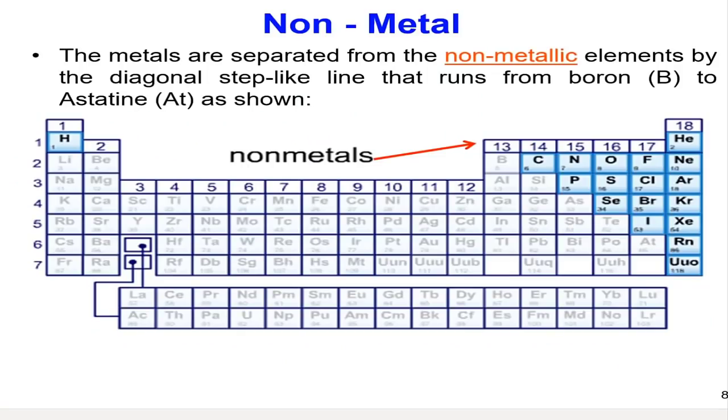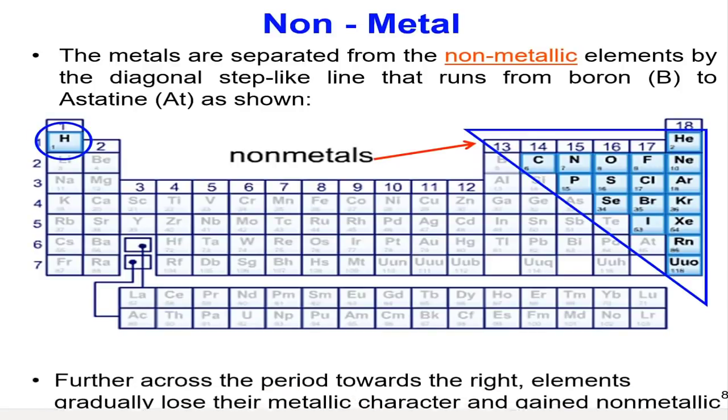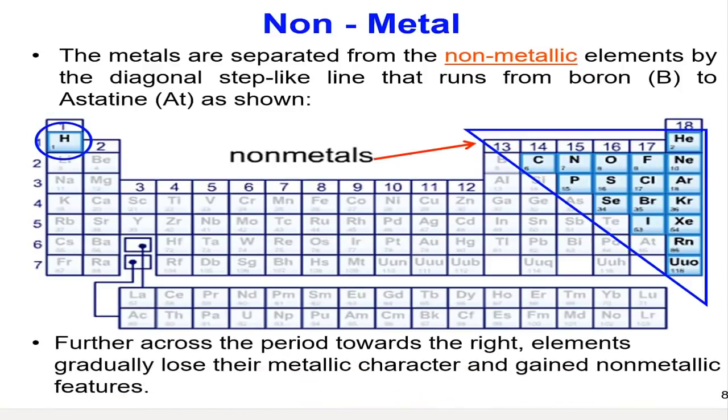Besides metal, we also have nonmetal elements. Nonmetal elements are found on the upper right of the periodic table and hydrogen on the upper left. As we go across the period towards the right, the elements gradually lose their metallic character and gain nonmetallic features. The nonmetallic elements are not shiny and they are nonconductors.